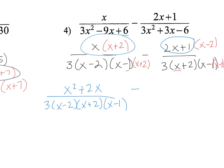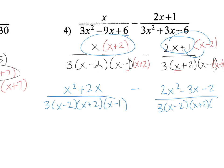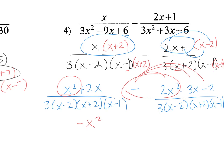And I'm going to FOIL this out. So this turns into 2x squared minus 4x plus 3x minus 3x minus 2 over 3 times x minus 2 times x plus 2 times x minus 1. Again, you have this negative, so each term needs to be opposite. So x squared minus 2x squared is negative x squared, and 2x minus a negative 3x is plus 5x.